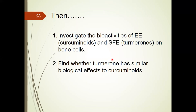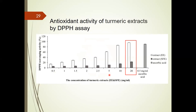We planned to compare the bioactivity of the ethanol extract and supercritical fluid extract on bone cells, and to study whether turmerone has similar biological effects to curcuminoids. First, we measured the anti-oxidant activity of turmeric extract by the DPPH assay. The results indicate that EE, the ethanol extract, had much higher anti-oxidant activity than SFE at every concentration.